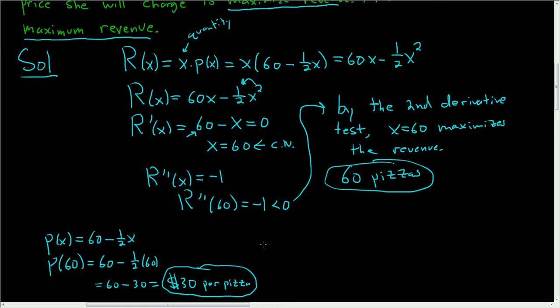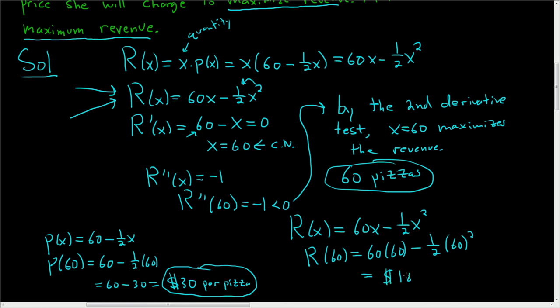We also have to find the maximum revenue. To find the maximum revenue, we just plug in 60 into the revenue function. R(x) is equal to 60x - 1/2x². So R(60) is 60 times 60 minus 1/2 times 60 squared. And if you put this in a calculator, you should get 1800. So that's the maximum revenue per day. I hope this helps.